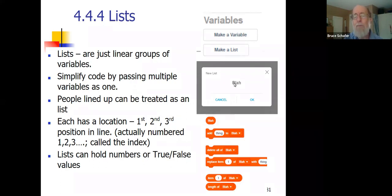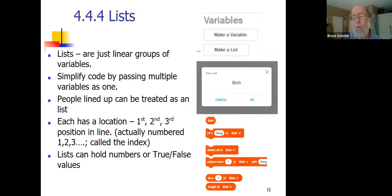You create a list by clicking Make a List and giving it a name — the slide author chose 'Blah'. It magically creates six Scratch blocks: one that refers to the list as a whole, one to add something to the end, one to delete everything from the list, one to replace something, one to set a particular item to a value, and another to find out how long the list is.